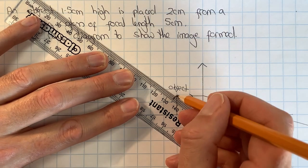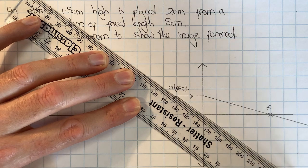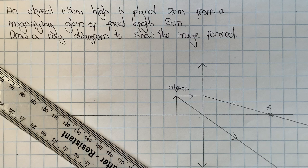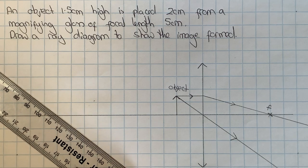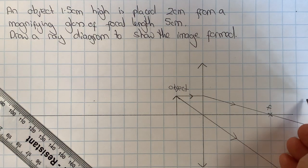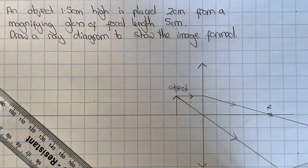I can draw that in like that, and where those rays cross will be where the... oh no, the rays don't cross. That tells me that I can't be getting a real image formed, which means I'm going to need to add in an eye over here.